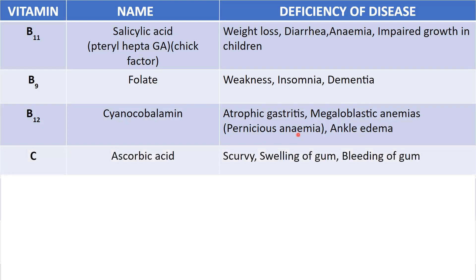Next is vitamin C, called ascorbic acid. Its deficiency leads to scurvy, swelling of the gums, and bleeding of the gums.